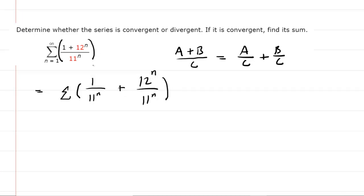So far so good. Now what we'll do is distribute the sigma, and this is where we're going to get two distinct series. So we'll have one over 11 to the n for the first series, and then the second series will just be 12 to the n over 11 to the n. Now we're actually going to rewrite that because the 12 and the 11 are each raised to the power of n, you can rewrite that as 12 over 11, all of which is raised to the power of n.